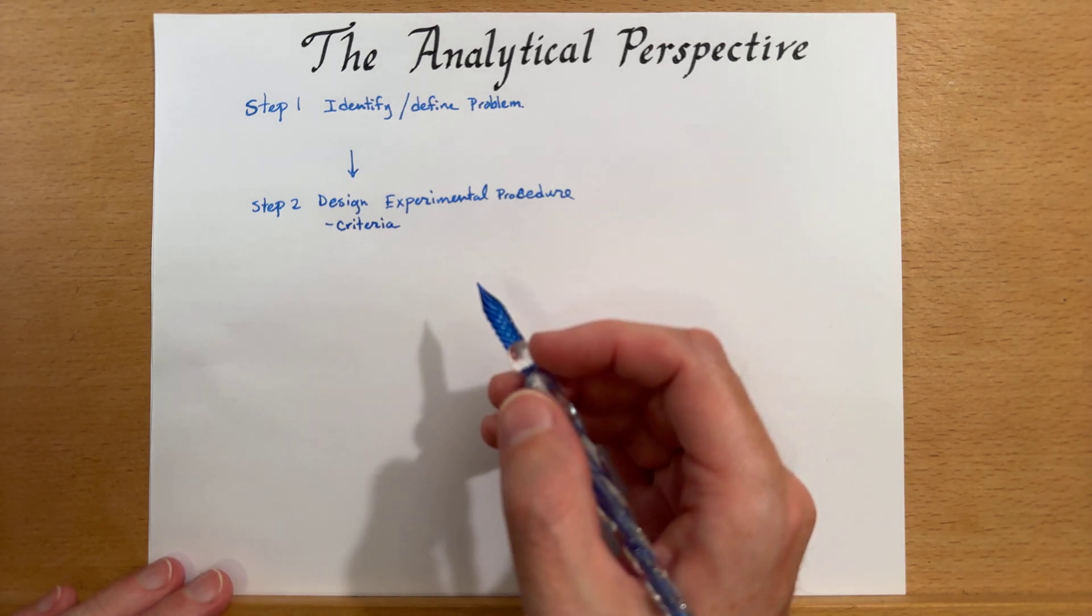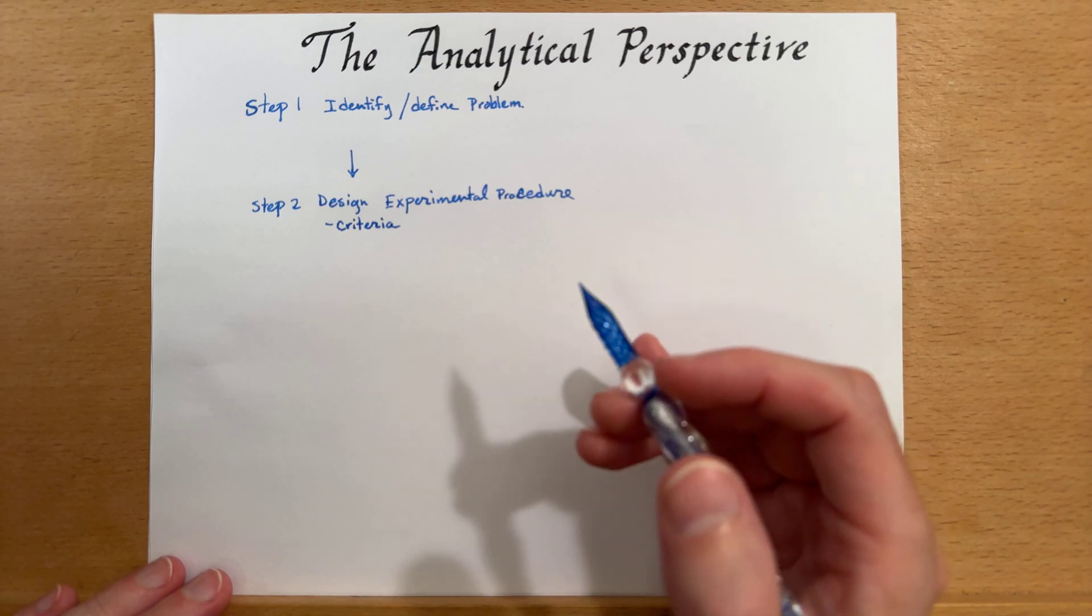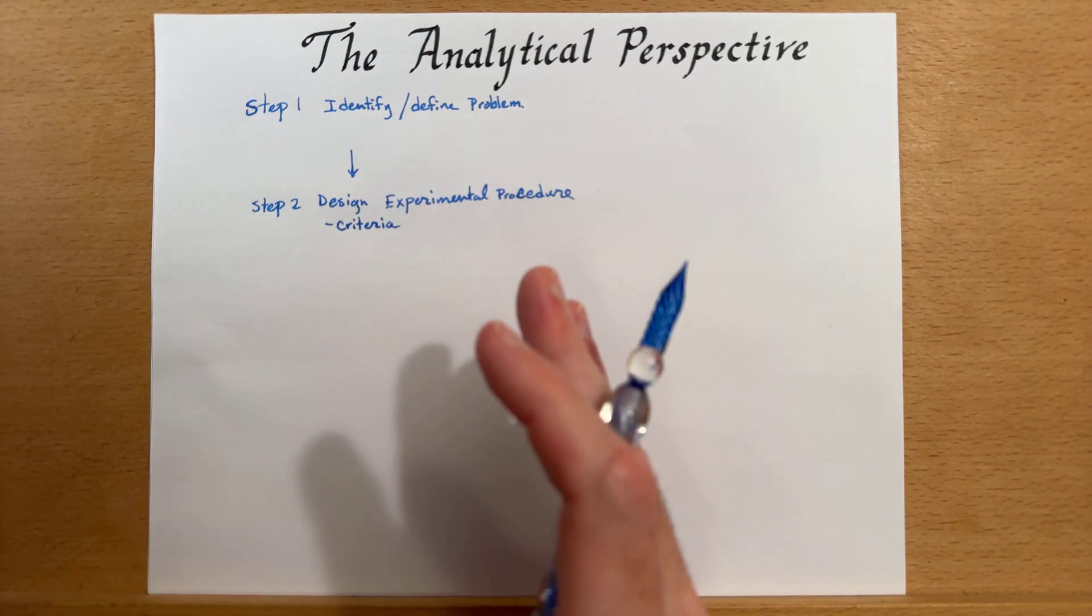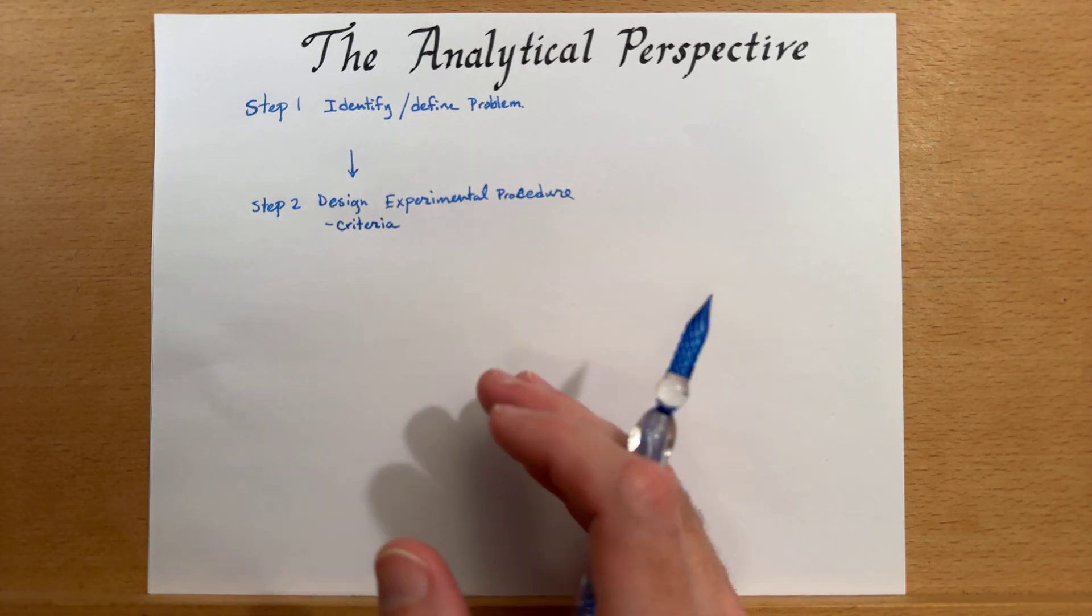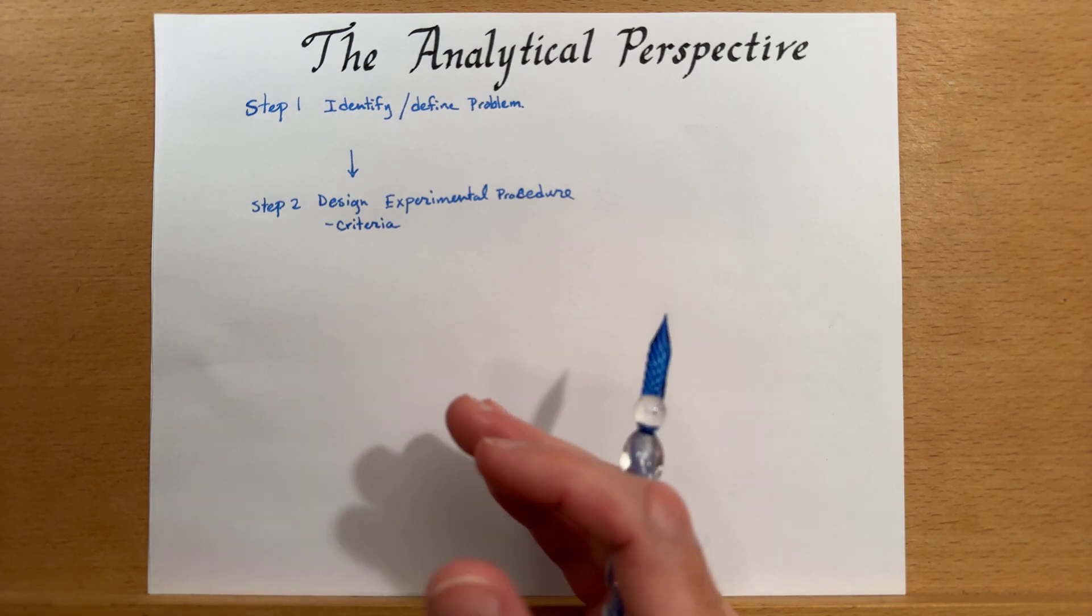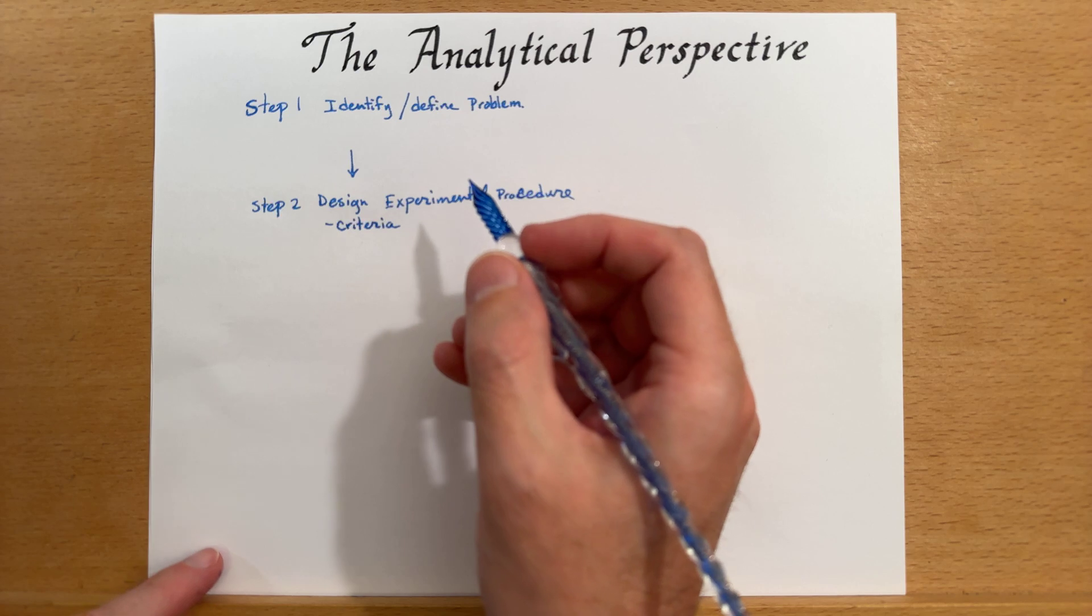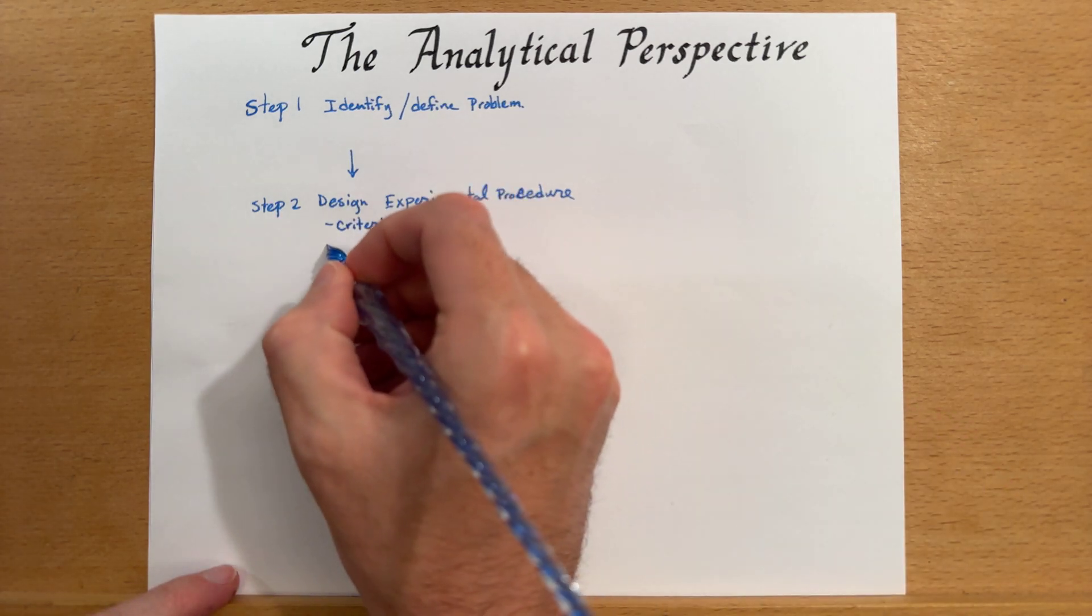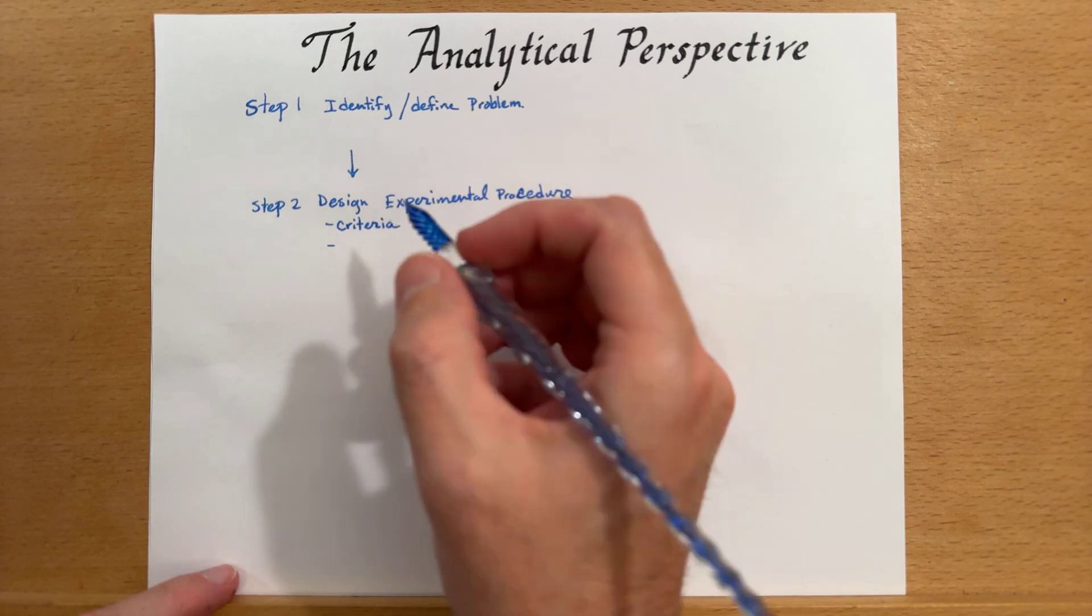If we're looking for lead in some water, we need to define what range of concentration we're looking for, and therefore then we can see if we've been successful. Because if we do not have criteria, then we haven't defined enough to investigate it.